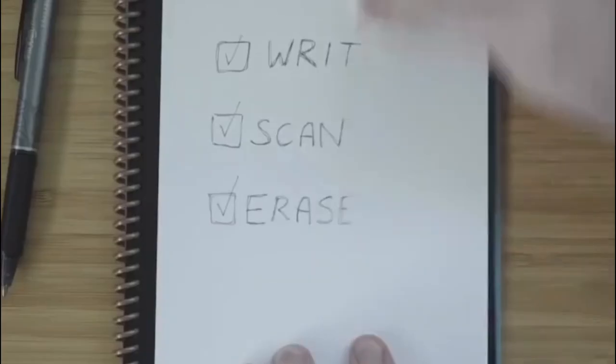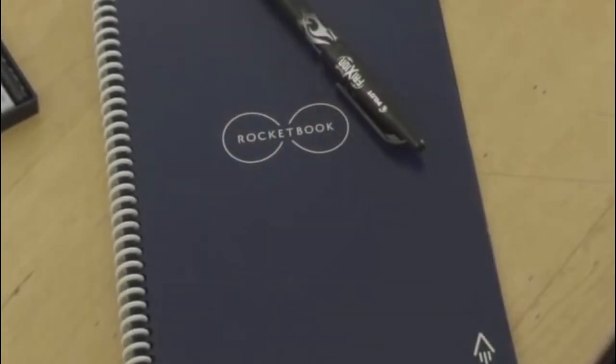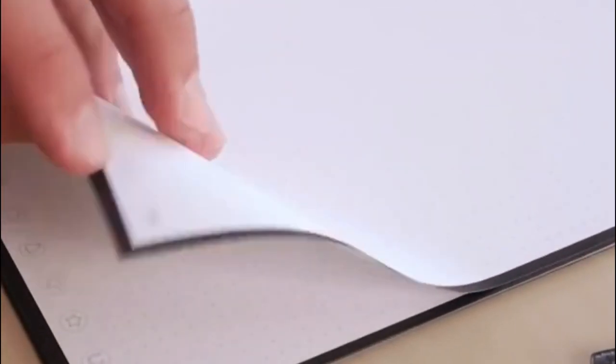Rocketbook Smart Reusable Notebook. No more wasting paper with the Rocketbook Smart Reusable Notebook. This environmentally-friendly 36-page dotted grid notebook may be used indefinitely by wiping clean with a damp cloth. Using the free Rocketbook app for iOS and Android, he can send his handwritten notes to major cloud services such as Google Drive, Dropbox, Evernote, Box, OneNote, Slack, iCloud, Email, and many more.